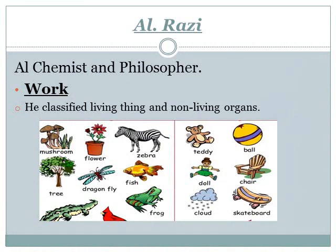Razi was an alchemist and philosopher. His work included classifying living things and non-living things. He is considered an expert — a surgeon and philosopher — and among his many achievements, he separated living things from non-living things.